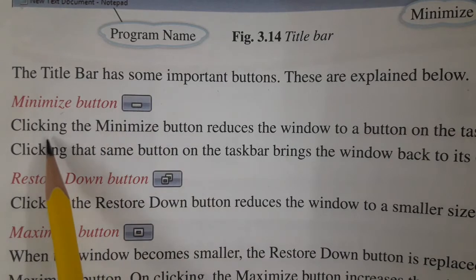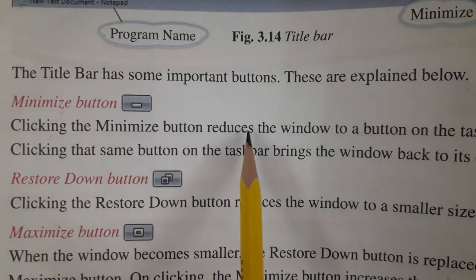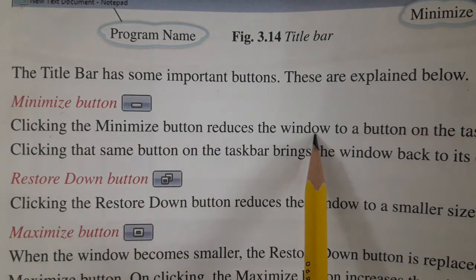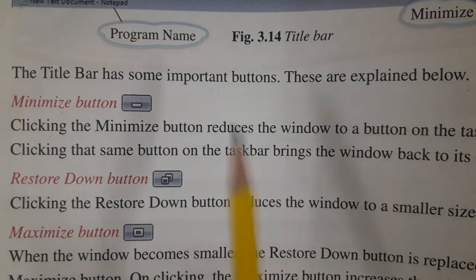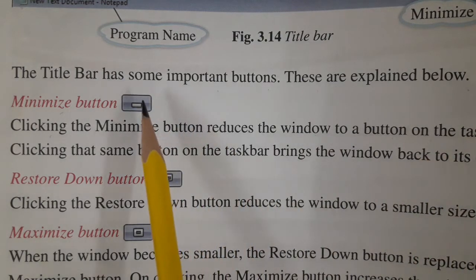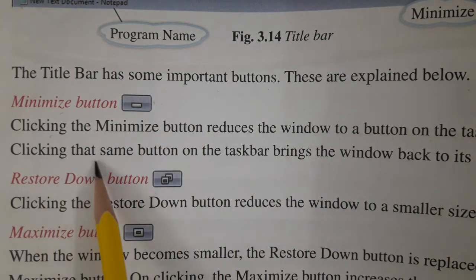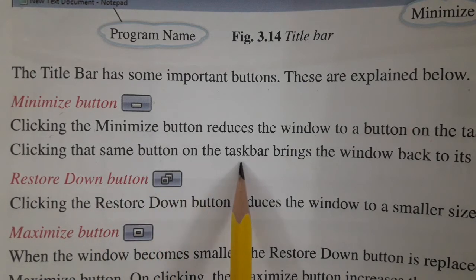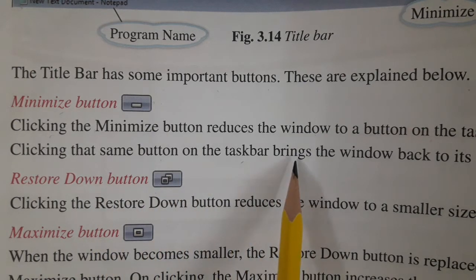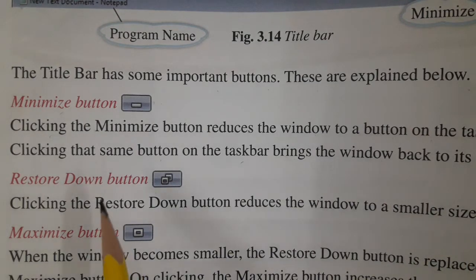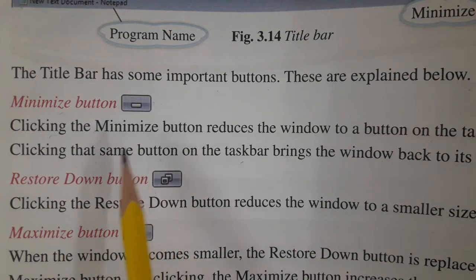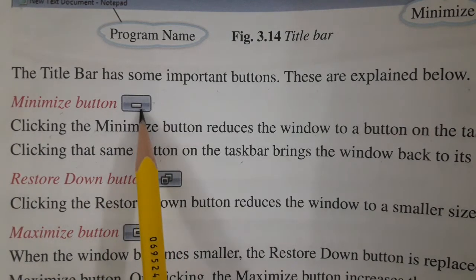Clicking the minimize button reduces the window to a button on the taskbar. Clicking that same button on the taskbar brings the window back to its original size.